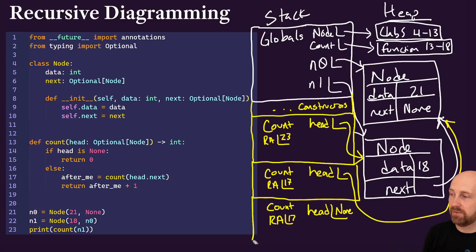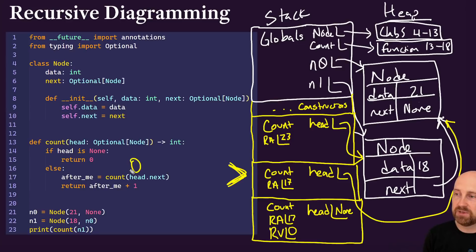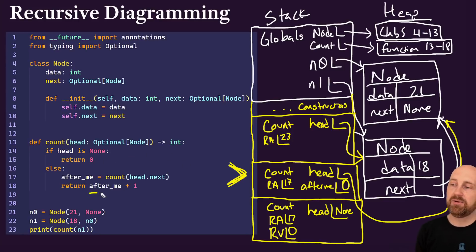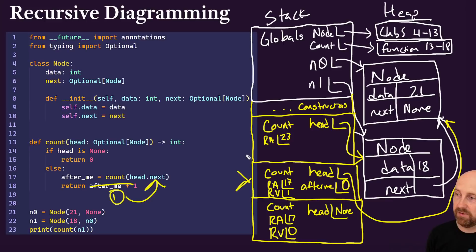Count gets called with head equal to none. We ask: is head none? Yes — that's true this time. So we return zero. We return zero back to line 17 in the frame just before it. That call to count returned zero, which gets assigned to the variable after_me (after_me = 0). Now we reach the return statement: return after_me plus one — after_me is zero, so the return value of this frame is one. We return one to line 17, the return address for this frame.